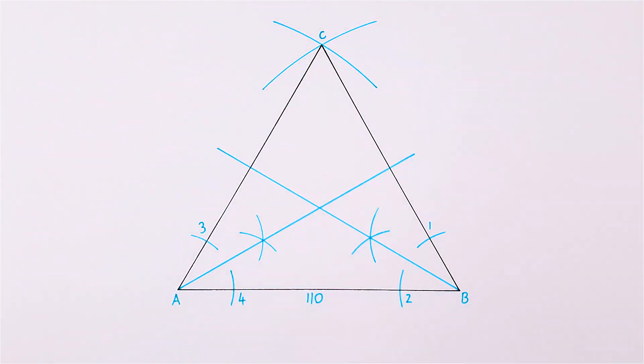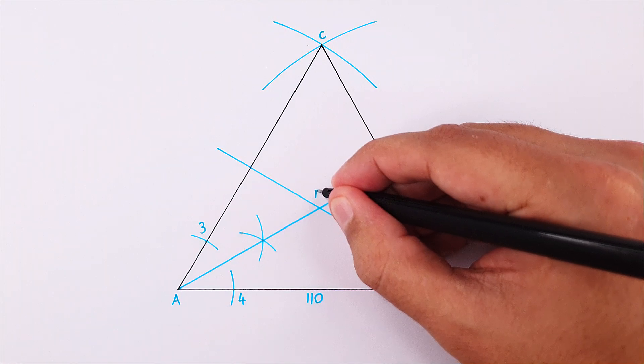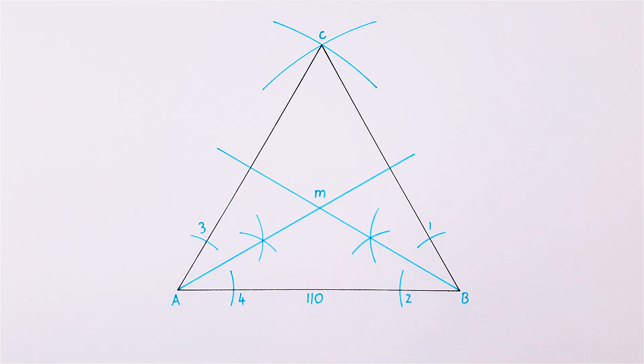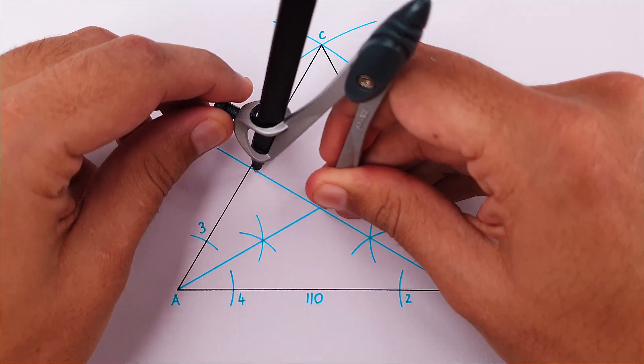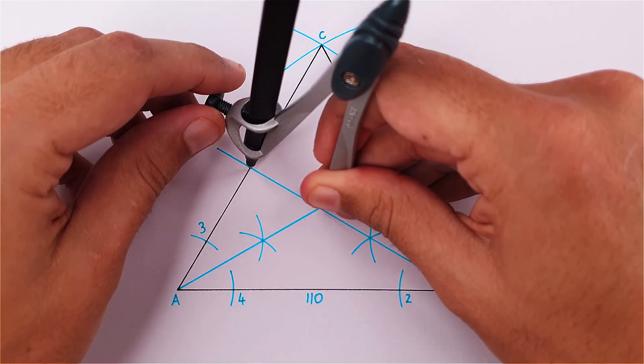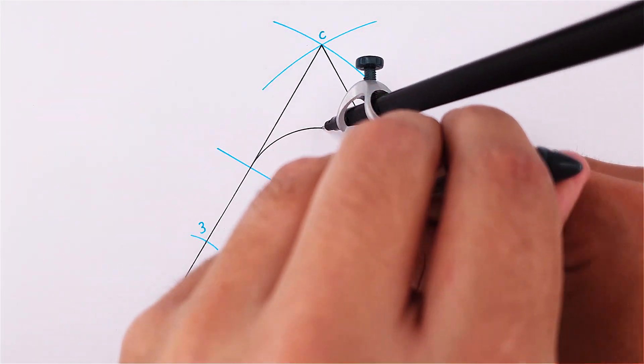Mark the point where the two bisectors cross. This is the center of the inscribed circle. Now place your compass on this point, adjust it to where the bisector touches the side and draw the circle.